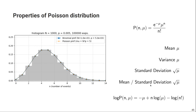Dividing the mean by the standard deviation gives the signal-to-noise ratio (SNR), which equals the square root of mu. This means a higher mu gives a higher SNR. For example, if you measure the activity of a point source by counting the number of decays detected in a time interval delta t, the measurement becomes more precise as more events are collected. To achieve higher precision in nuclear physics or nuclear medicine, you should acquire data for a longer time, and the SNR improvement scales with the square root of mu.